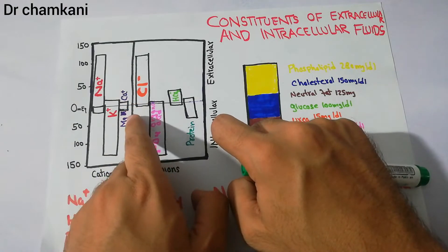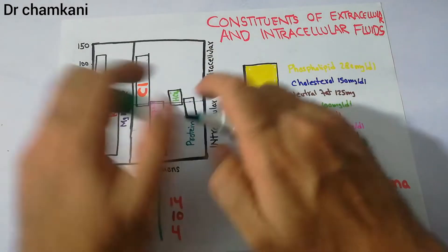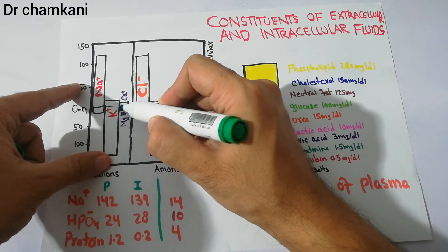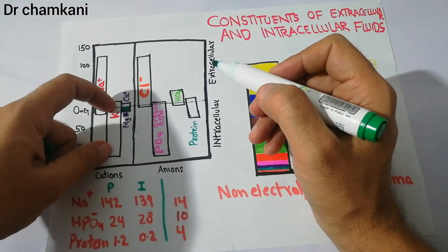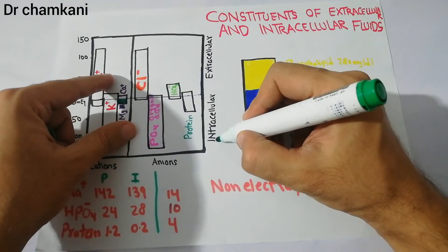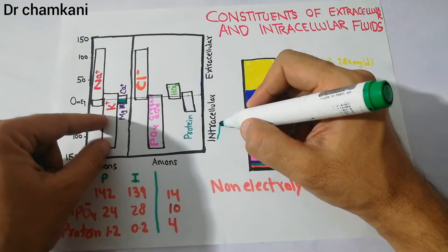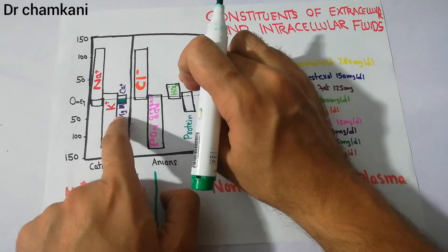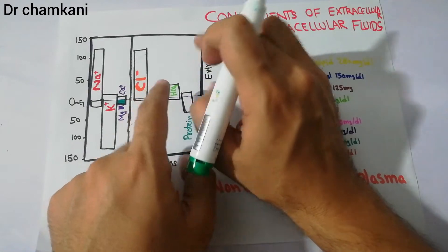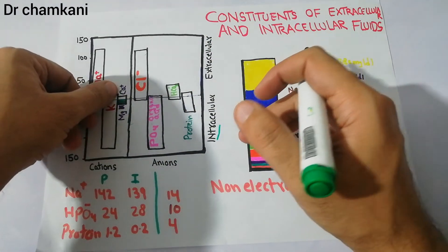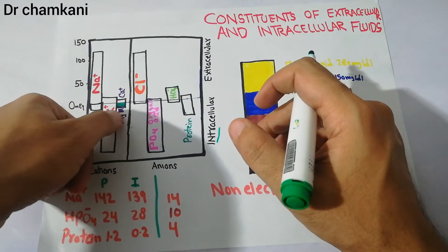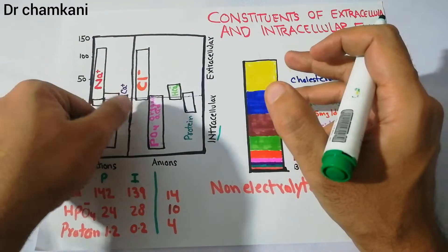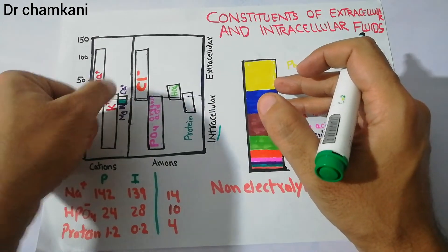Magnesium is higher in concentration in the intracellular fluid. Its total amount is small compared to potassium, but it is notably more concentrated inside the cell, while in the extracellular fluid its concentration is almost zero. Calcium, on the other hand, has almost no concentration in the intracellular fluid, but a small amount of calcium is present in the extracellular fluid.